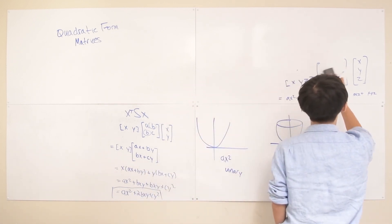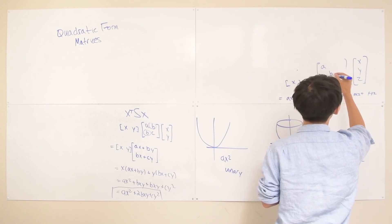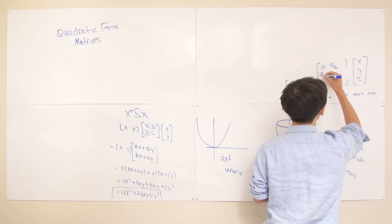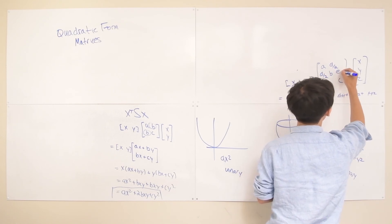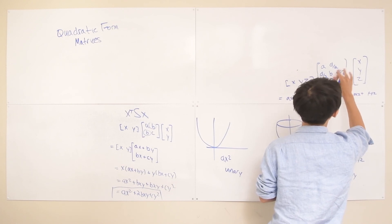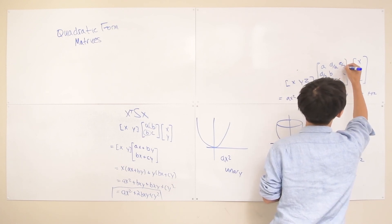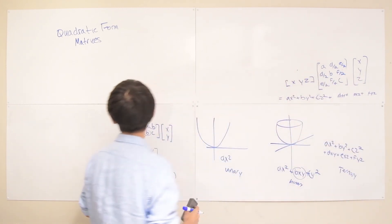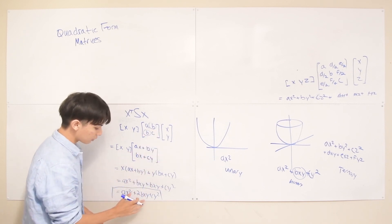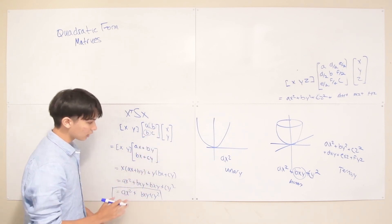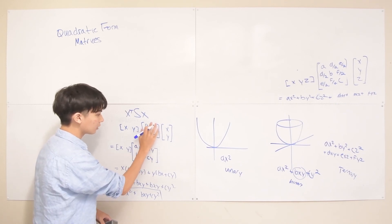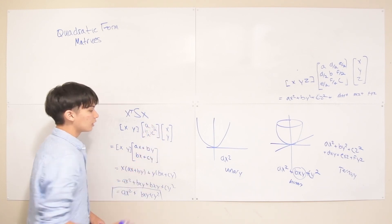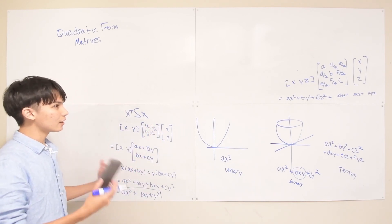So to rewrite this cleanly: the diagonal entries stay as a, b, c, but the off-diagonal entries are d/2, d/2, e/2, e/2, f/2, f/2. Similarly for the binary case, if you want bxy rather than 2bxy, you put b/2 in the off-diagonal positions of your 2x2 matrix. That's generally how you design the coefficients when using matrices to express a quadratic form.